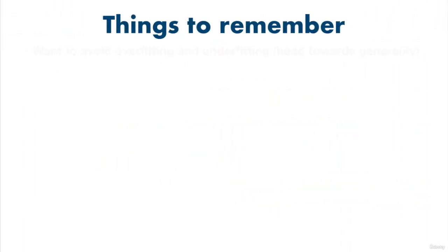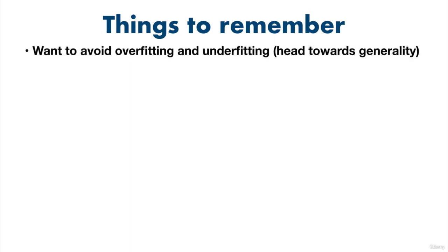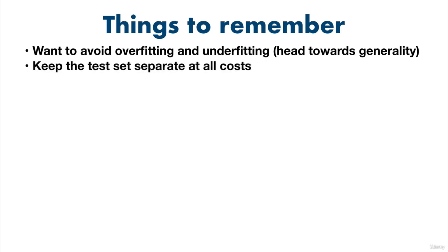A couple of things to remember from this lesson. Avoid overfitting and underfitting — you want a model that heads towards generality. It's like when you do your practice exam: if you saw the final exam, you might just become an expert memorization machine rather than someone who could use their knowledge in the real world. Keep the test set separate at all costs — when you split your data, lock away the test data set, and only open it once your model has been trained. When comparing models, compare apples to apples: have model 1 and model 2 on data set 1, ensuring the comparison is legitimate.